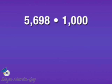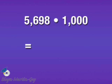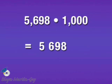Let's multiply 5,698 by 1,000, using the shortcut pattern when multiplying by a whole number ending in zeros. Because 1,000 has three zeros in it, this product turns out to be this number. I'll simply put the digits down — 5, 6, 9, 8 — and attach three zeros to the end.